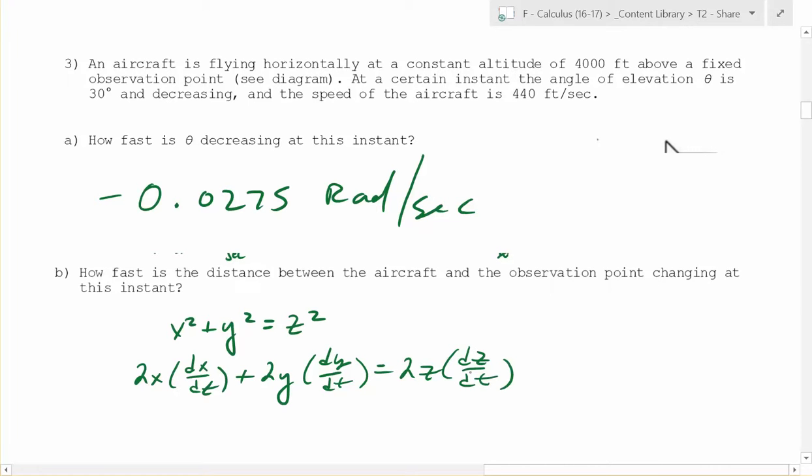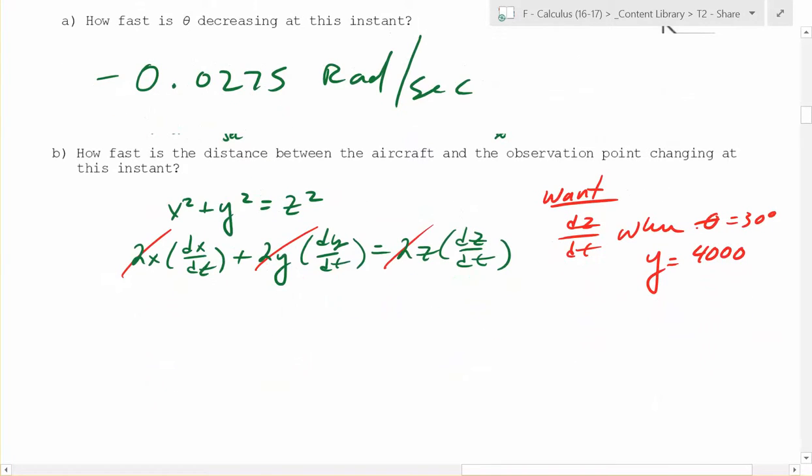Exactly. And then what cancels now? The twos cancel, right? And you want what? Which one do you want? You want dz dt when theta is 30 degrees and what? How high was it? 4,000, I think. And you also had already figured out what x is at that point, right?